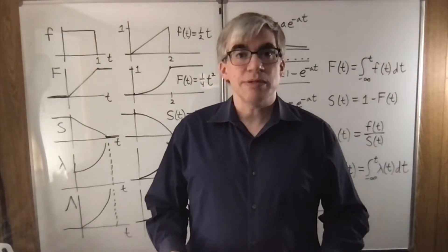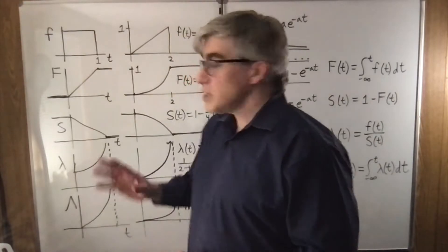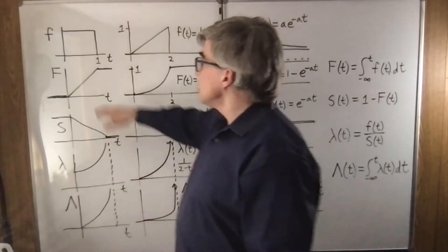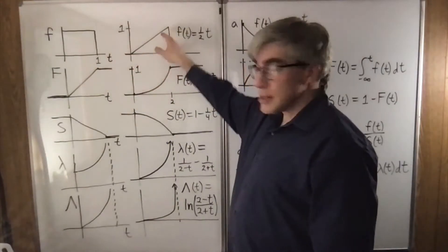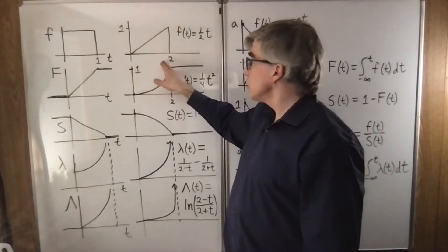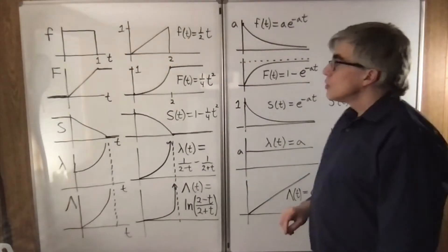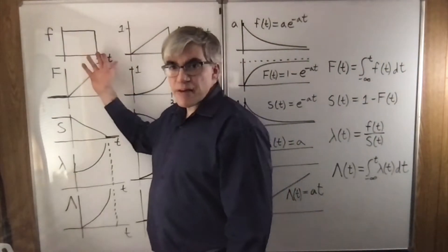Here are a few examples of hazard functions. Three different probability densities: the uniform density from 0 to 1, a triangular density from 0 to 2, and an exponential. Those are what we call the PDFs.